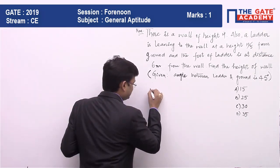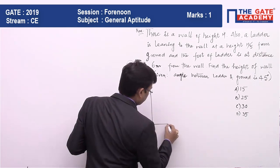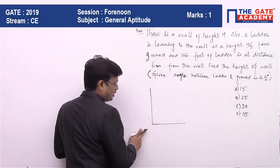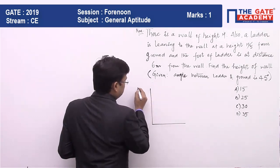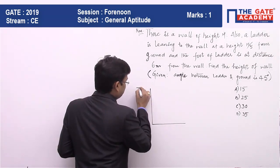So just assume this is a wall and this is ground, and the height of this wall is given as h.